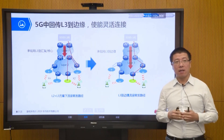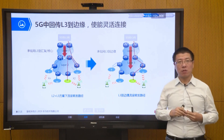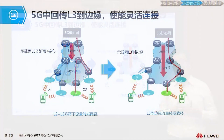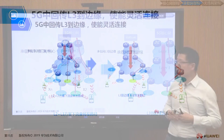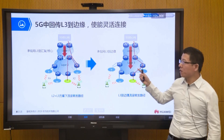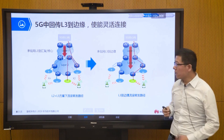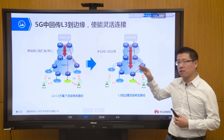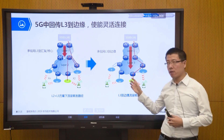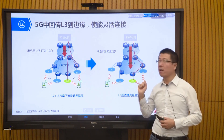We just looked at some changes in the core network architecture of 5G. Let's look at the second part next: 5G in the bearer network, or what we call the backhaul network. In the backhaul network, the entire bearer network is divided into access ring, convergence ring, and core ring.